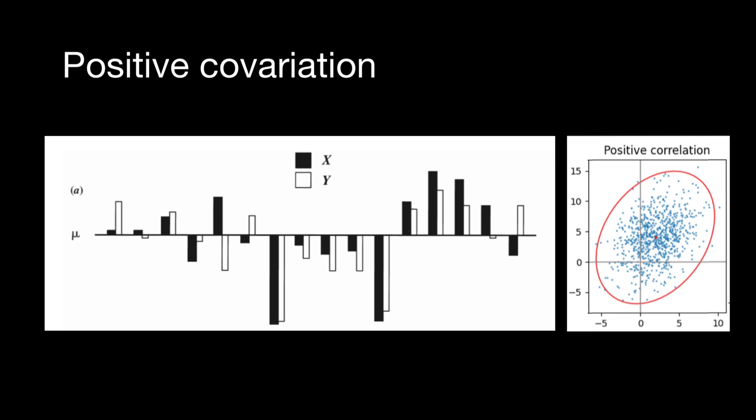Each pair of black and white columns represent X and Y attributes for single animal, expressed as deviations from the overall mean or mu. In this picture, we see that X and Y show strong relationship with each other. Positive deviations for X are quite consistently associated with positive deviations for Y.